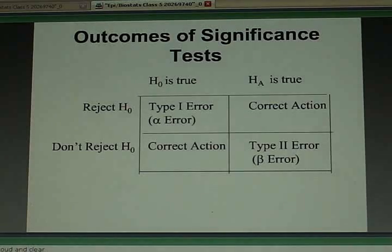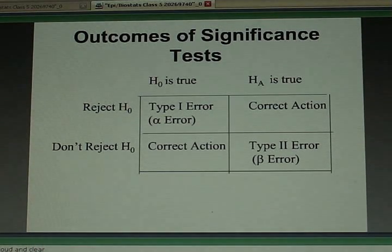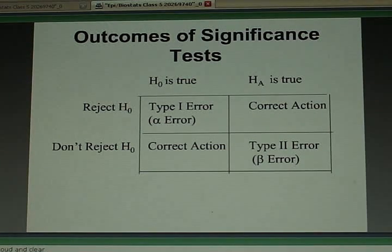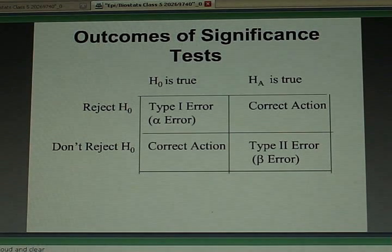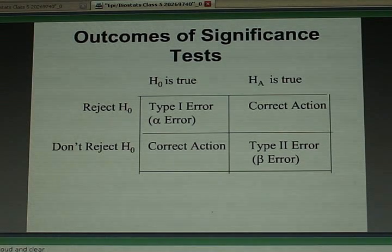And the other extreme is you always did not reject the null hypothesis. You'd never make a type 1 error, but you'd always make a type 2 error. And it turns out that these two errors you make are related to one another. As you increase your chances of making a type 1 error, you decrease your chances of making a type 2 error.